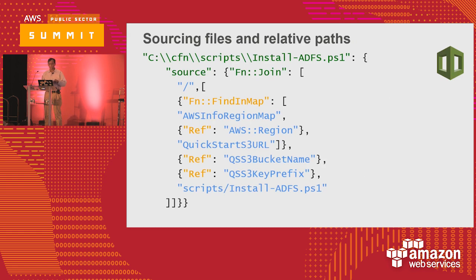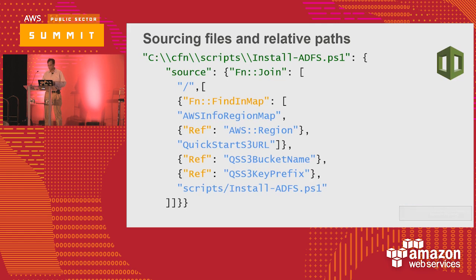In a CloudFormation template, instead of hard-coding the region and location of your PowerShell script, you provide a choice of where the region is. You can have the user select it and use it, and then the folder, directory, and file can be picked. CloudFormation has constructs that allow you a drop-down list — the FindInMap, collect and select the region, select the bucket name — all of that.